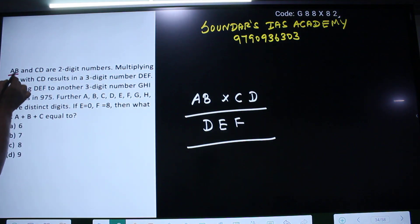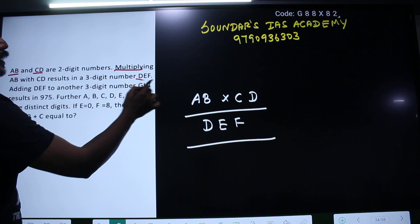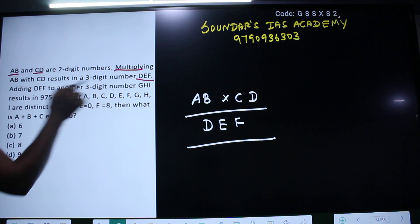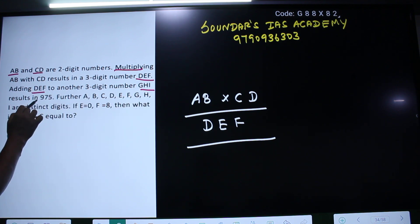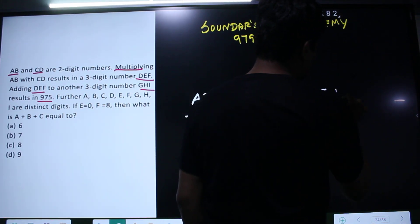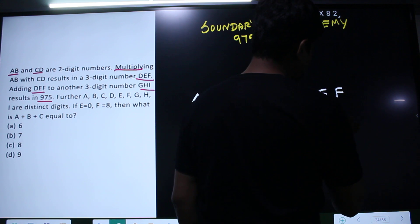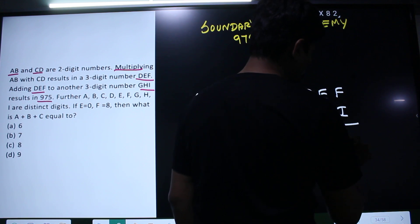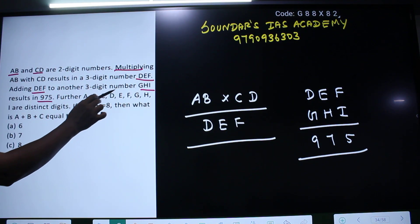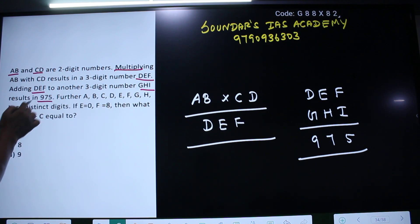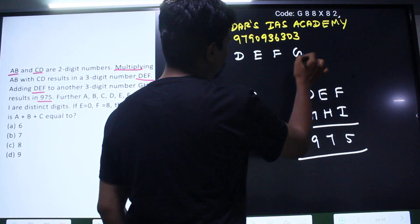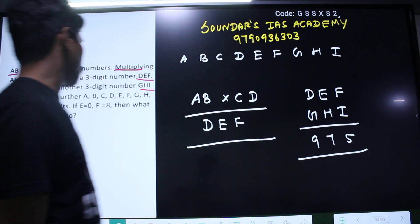That's how you say it. AD is a 2-digit number, CD is a 2-digit number. When you multiply them, DEF is a 3-digit number. Adding DEF to another 3-digit number GHI, the results are 975. DEF and GHI add to give 975.